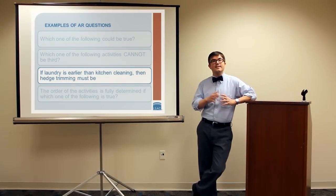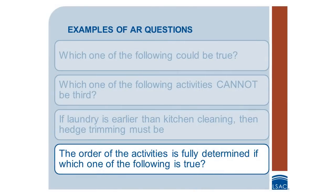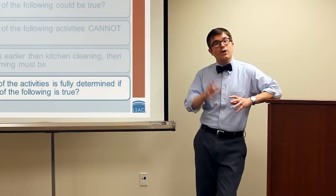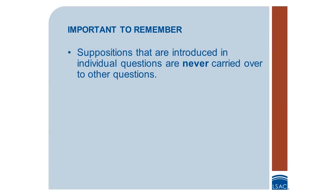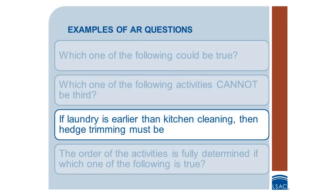As a final example of the kind of question we ask in AR, consider: the order of the activities is fully determined if which one of the following is true. For a question like this, you would need to identify the answer choice that would force an ordering upon the activities. It's important to note that suppositions introduced in individual questions are never carried over to other questions. The supposition that laundry is earlier than kitchen cleaning would only apply to that individual question, not to any other question about the scenario.